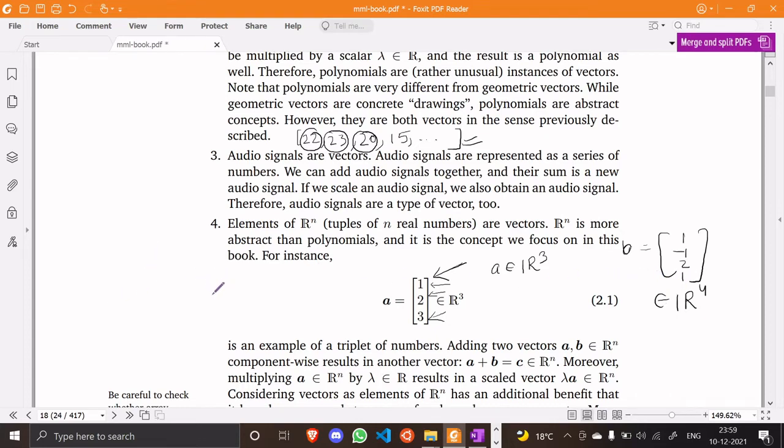Now we say that elements of R to the n, the tuple of n real numbers are vectors because if we define component wise addition right so let's consider 2D vectors for now and we add them this way. We define the addition between two vectors as the component wise addition of their elements. So the first element of this result will be 4 and the second component will be 6 because 1 plus 3 is equal to 4 and 2 plus 4 is equal to 6 and this is also a vector which belongs to a 2D vector, two dimensional vector.